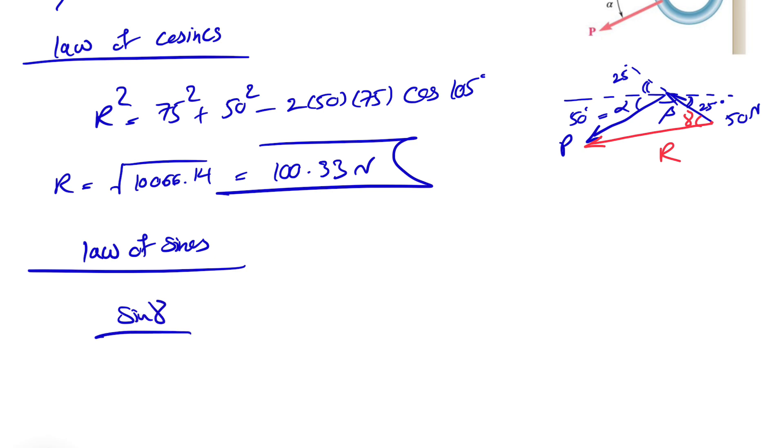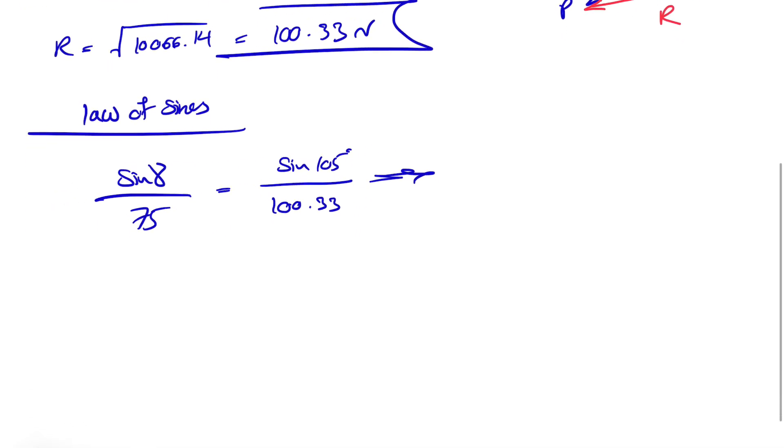We're going to use the law of sin. Basically, we have sin of gamma over this side in front of that, which is P. So we know P is 75 newtons equals R, which we found in the previous step is 100.33. And the angle in front of it is beta or sin of 105 degrees.